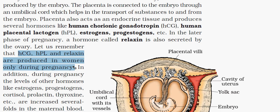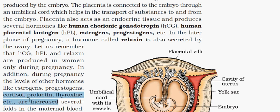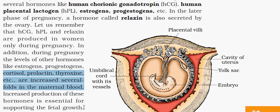Human chorionic gonadotropin, human placental lactogen, estrogen, progesterone, as well as relaxin are the hormones produced during pregnancy.